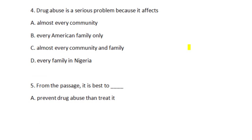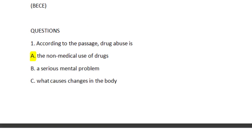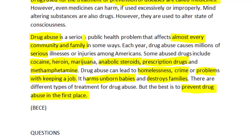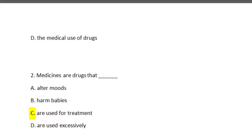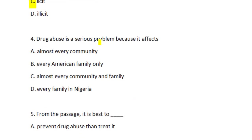Question four: Drug abuse is a serious problem because it affects — A) almost every community, B) every American family only, C) almost every community and family, D) every family in Nigeria. From the passage: drug abuse is a serious public health problem that affects almost every community and family. So the answer is C — almost every community and family.